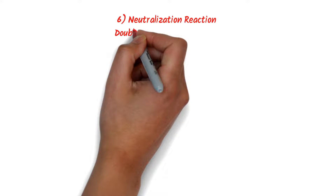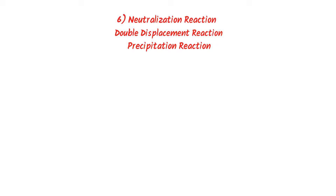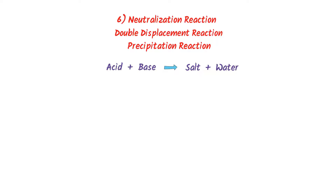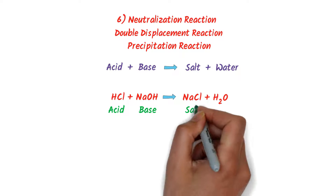Finally, neutralization reaction — also known as double displacement reaction or precipitation reaction. In a neutralization reaction, when acid and base react together, they form salt plus water. For example, HCl plus sodium hydroxide react together to form sodium chloride plus water. Here, HCl is an acid, sodium hydroxide is a base, and sodium chloride is a salt.